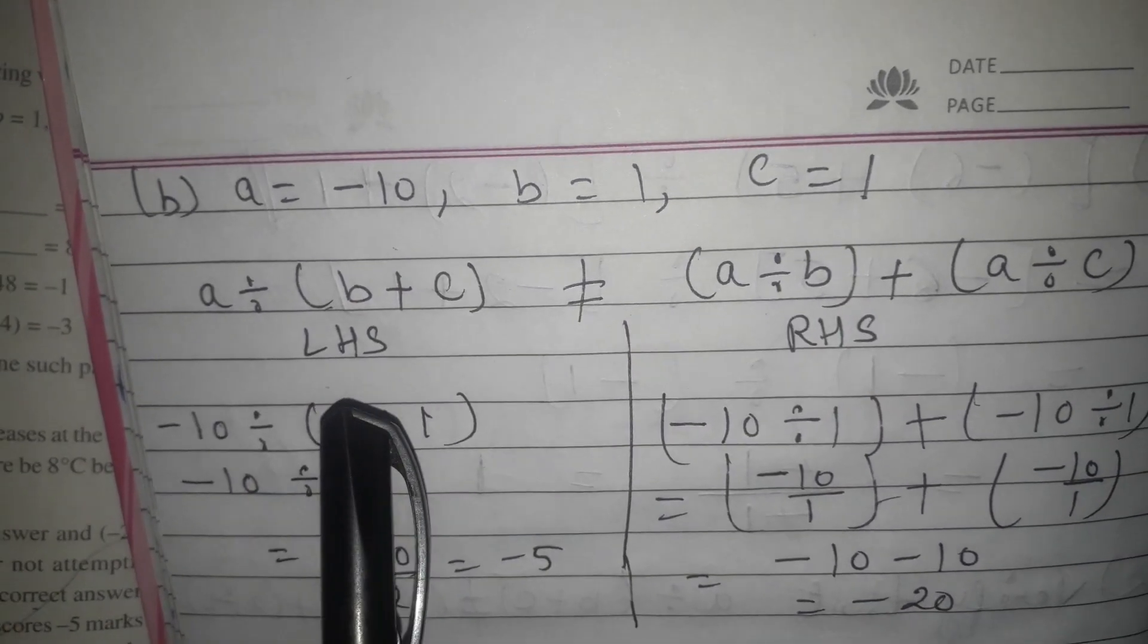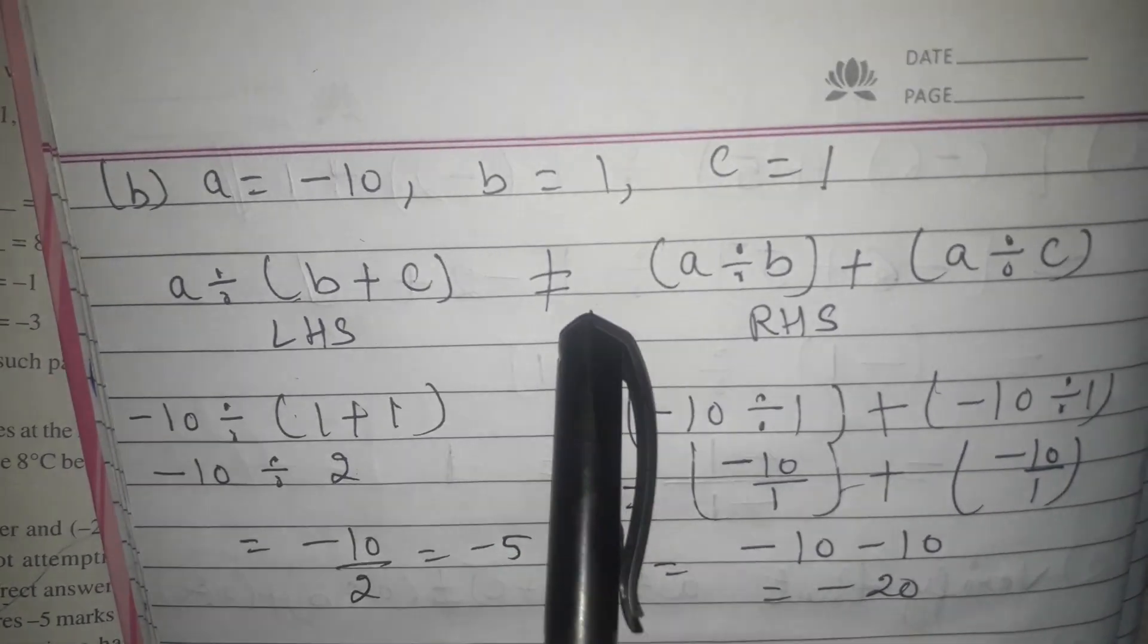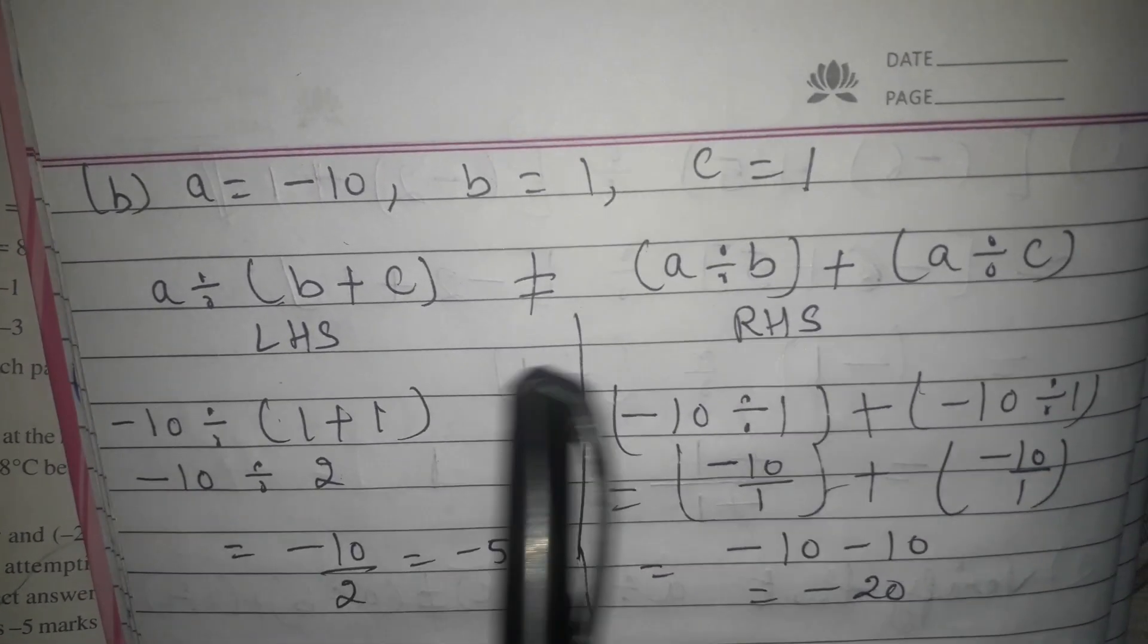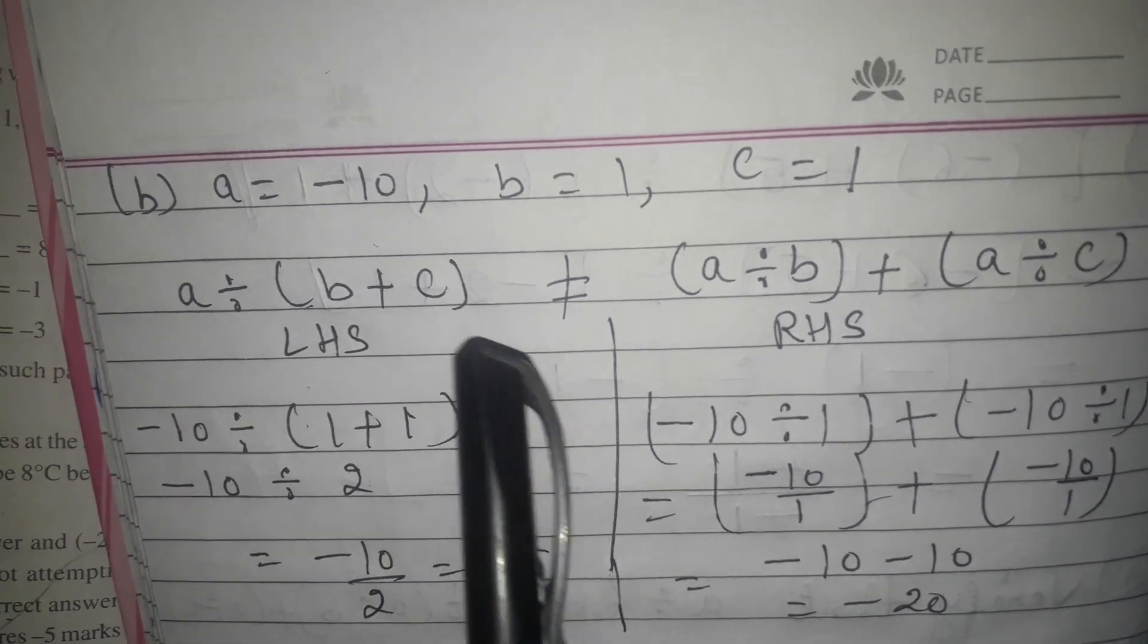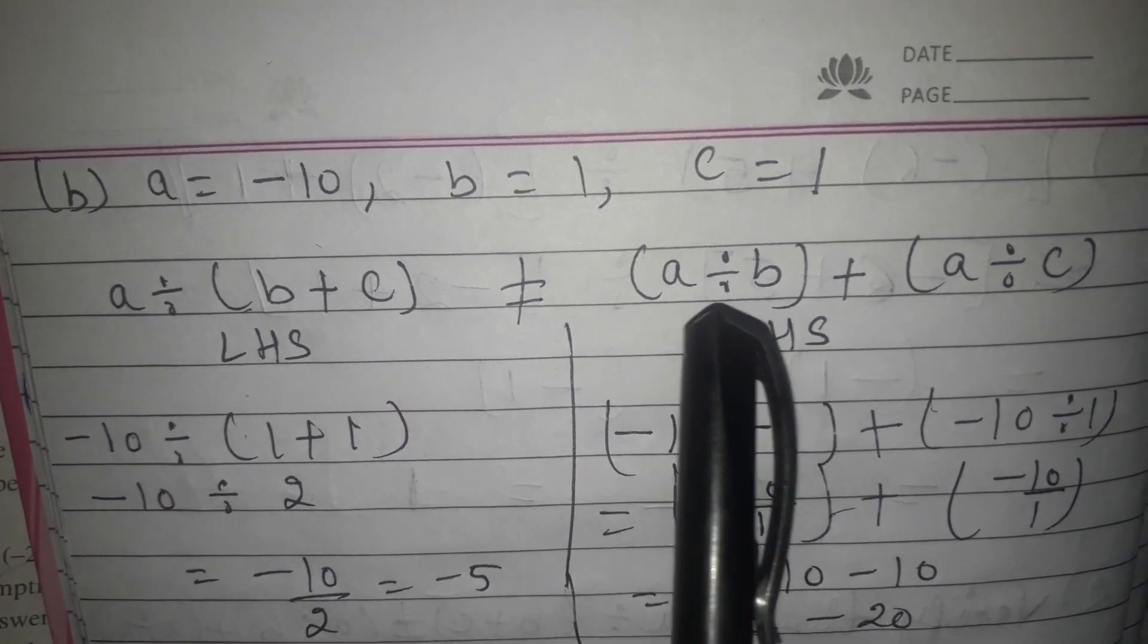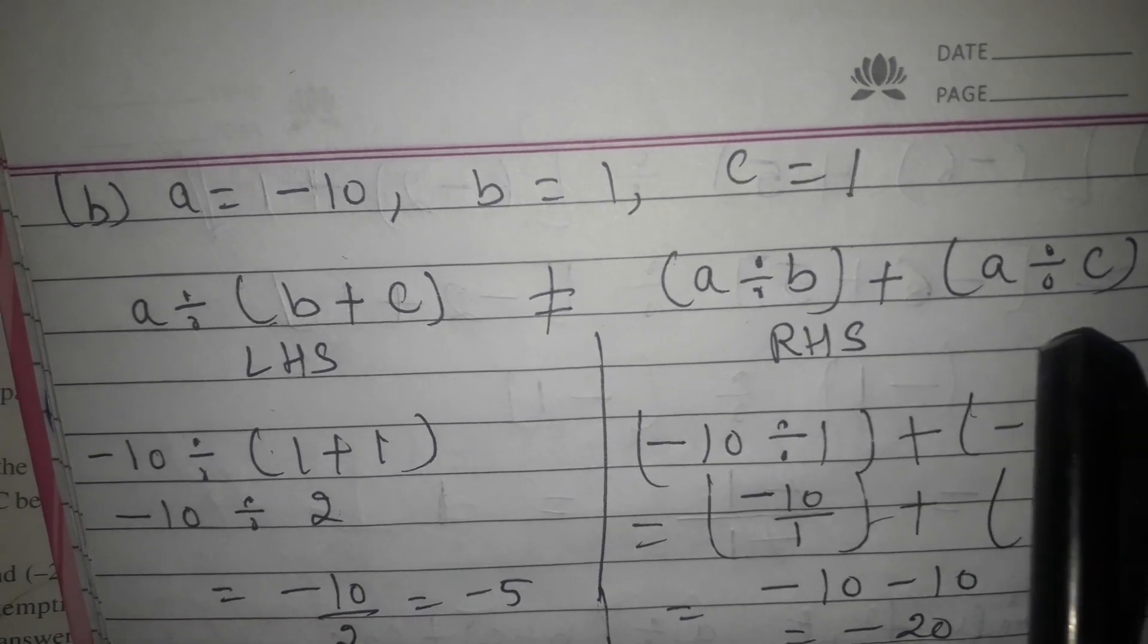In this part, you have to prove that LHS is not equal to RHS. Here LHS is A divided by B plus C in bracket, and RHS is A divided by B plus A divided by C.